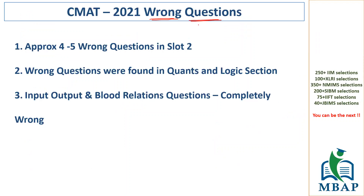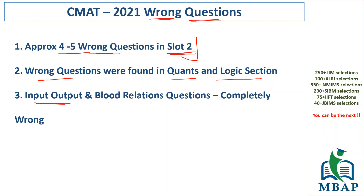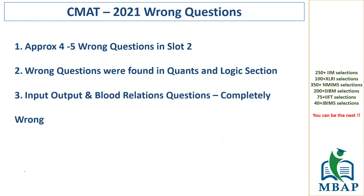With regards to the wrong questions, what exactly happened? In slot number two, approximately four to five questions have come wrong. Some people are saying five or six, some are saying two to three, but it is certain that people got wrong questions in their slot, especially slot number two. From slot number one, we haven't heard any complaints about wrong questions or missing extra time. But from slot two, the complaint has definitely come up. From our faculty who also gave the exam, the wrong questions are majorly found in the quant section and logical reasoning section. The verbal section is also mentioned by some students, but that is not very clear. Precisely, input-output and blood relation questions were completely wrong — there were errors in these questions, meaning the right answer option was not available, or the entire flow of logic was not proper.